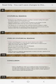Steps of syntoptical reading: Create a total bibliography of works that can be relevant to your subject. Inspect all the books on your bibliography to decide which are relevant and to better define the subject. Find the most relevant passages within the bibliography. Find the authors' terms with each other. Frame a set of questions to which most of the authors can be interpreted as giving answers. Define the issues by ranging the opposing answers of authors and read questions through the light of the subject.